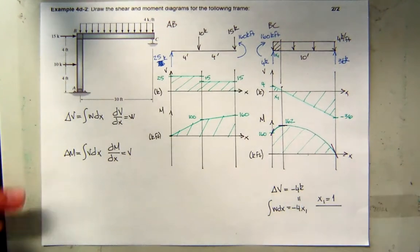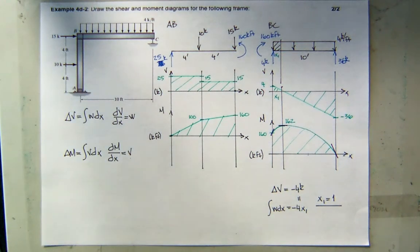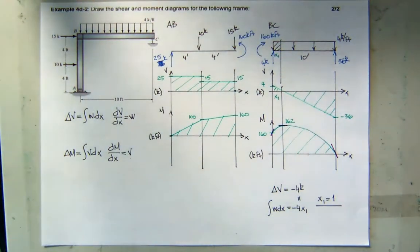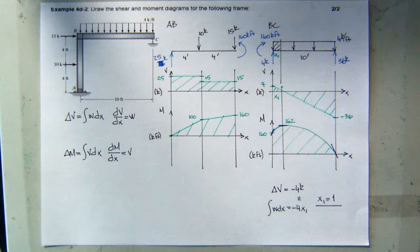If someone asks what the maximum moment in this frame is, the answer is 162 kip-feet, located one foot to the right of B. I would be prepared to answer that question about this shear and moment diagram. Any other questions? Are we going to do frames like this on the test? No — I'm going to save those for the second test.